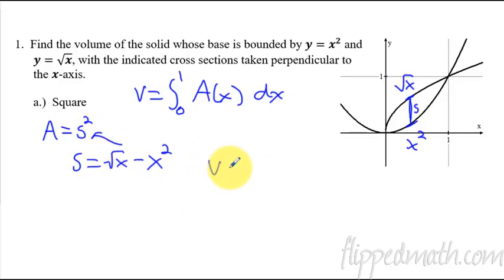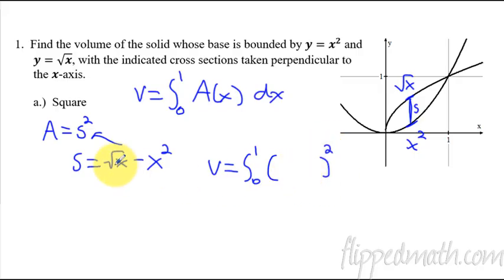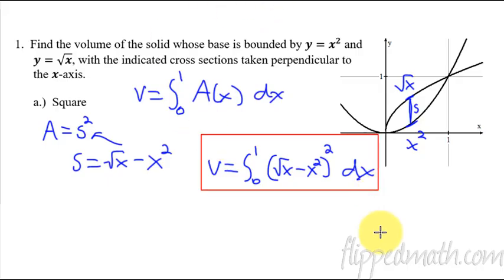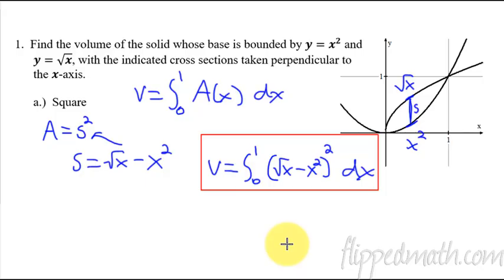So now we plug that in. Volume equals the integral from 0 to 1 of the area of a square, which is S squared — so (square root of x minus x squared) quantity squared, with respect to x. That is the volume integral. We're not going to spend time in this lesson actually evaluating the integral — you'd have to multiply this out. We're focusing on how to set it up.